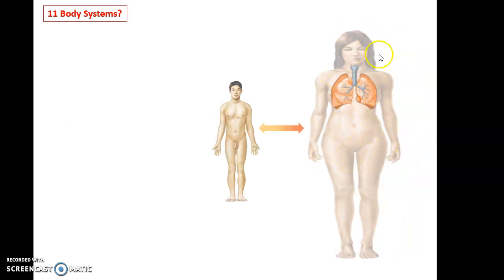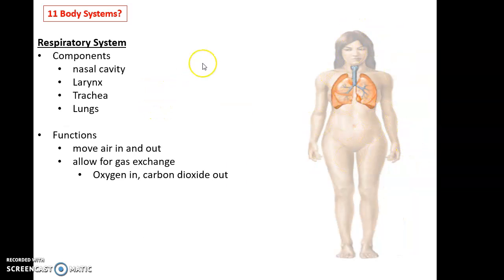We have this lovely system, the respiratory system, including such components as the nasal cavity, the larynx, the trachea, and the lungs. The respiratory system is involved in moving air into and out of the lungs. And the reason we do this is to allow for gas exchange, to allow for oxygen to move from the air into our bloodstream, and to allow carbon dioxide to move from the bloodstream into the air we then exhale.